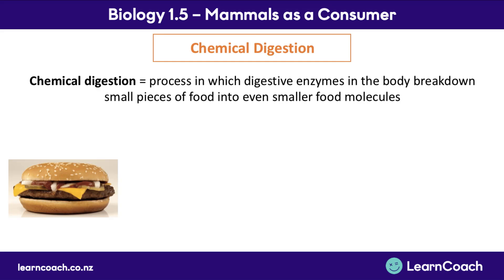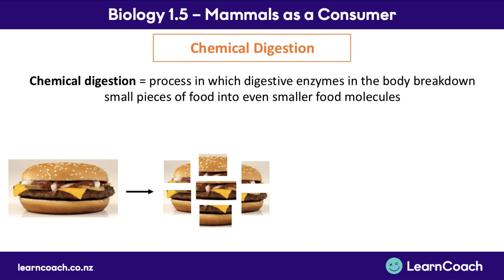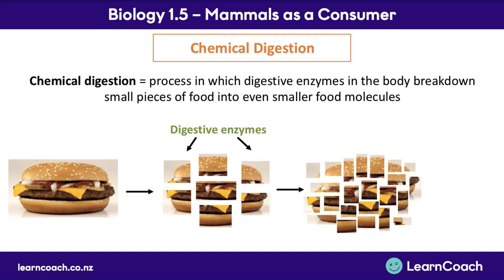We don't just eat a hamburger and absorb it whole — we need to break it down. Physical digestion mainly occurs in the mouth, chewing food into smaller pieces. However, those pieces are still too big to absorb, so we need chemical digestion to make them smaller. Digestive enzymes are like a pair of chemical scissors — they cut up the already-chewed pieces of food into the smallest possible units, which can then be absorbed across the gut into the bloodstream.